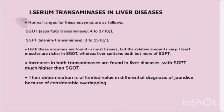Increases in both transaminases are found in liver diseases, with SGPT much higher than SGOT. Their determination is of limited value in differential diagnosis of jaundice because of considerable overlapping between conditions.